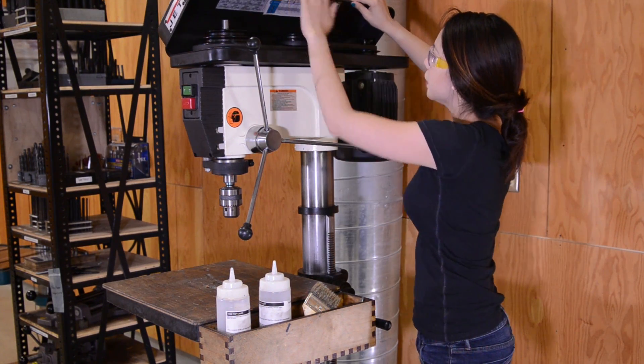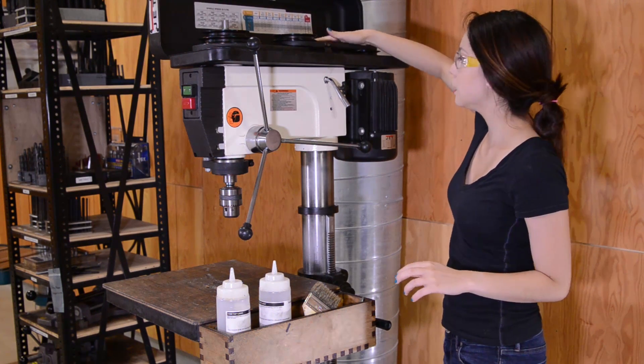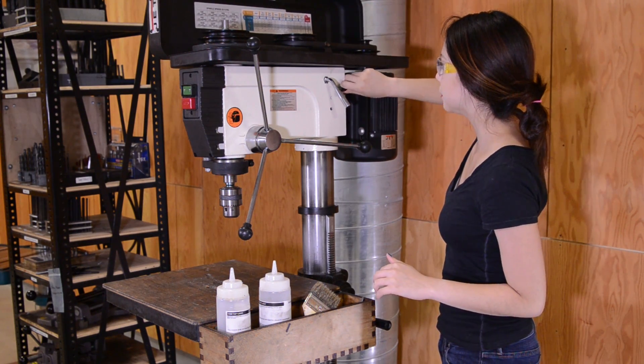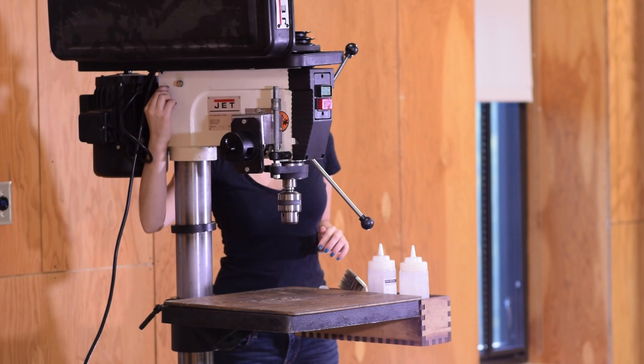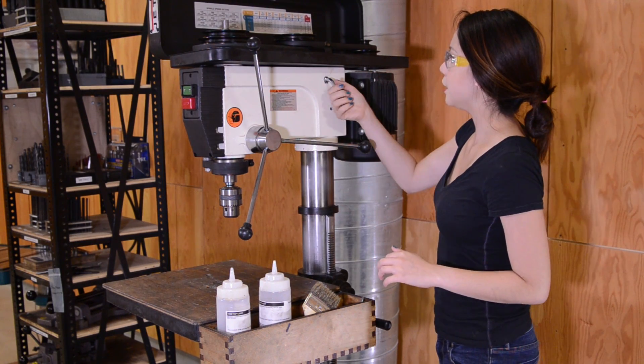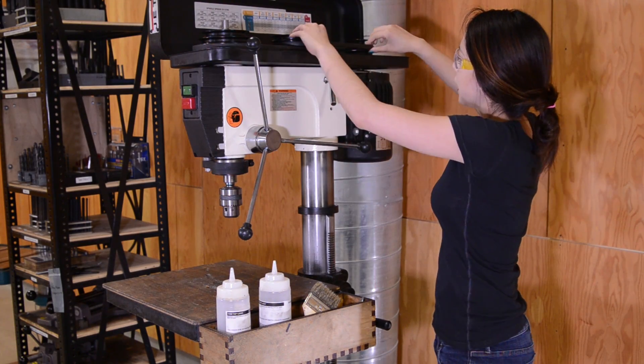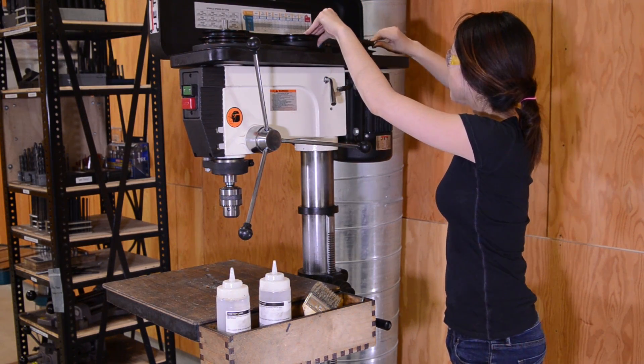So inside of here, you have your pulleys and your belts, and this will change the speed. If you want to, you can loosen, there's generally a screw on each side of your drill press, and then use this handle to adjust. So right now, I'm de-tensioning it so that I can potentially change the speed using these belts.